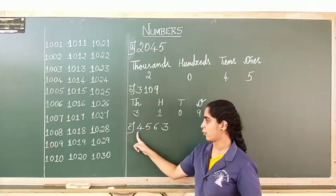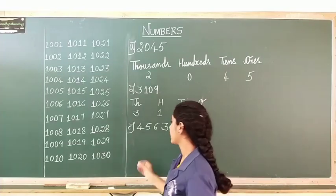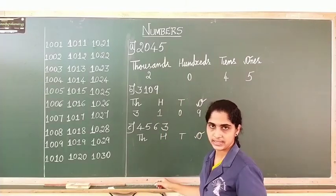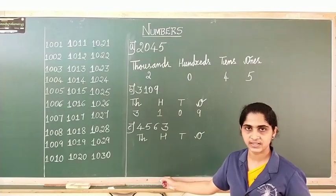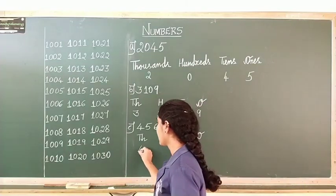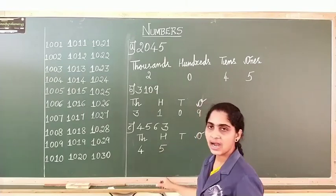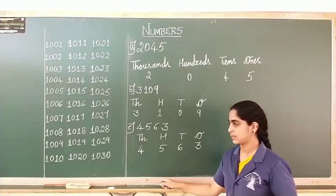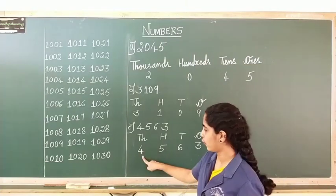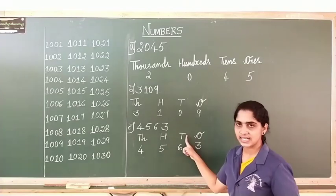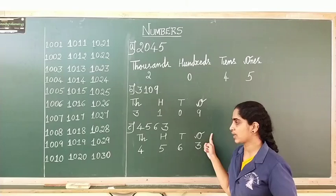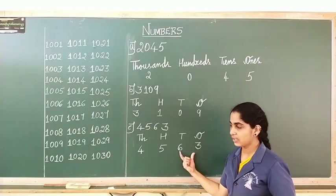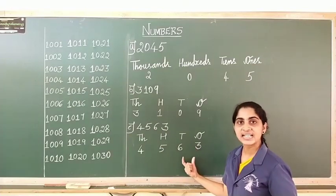You can see the digits here: 4, 5, 6, 3. Let us write according to the places — thousands place, hundreds place, tens place, and ones place. 4 should be in thousands place, 5 should be in hundreds place, 6 should be in tens place, and 3 should be in ones place. So here we can see 4 thousands, 5 hundreds, 6 tens, and 3 ones. When we are reading it together, it will be 4,563. How do we read it? 4,563.